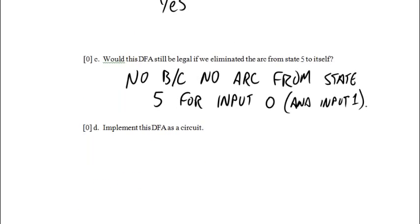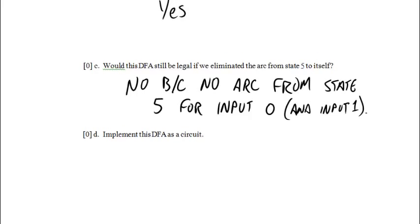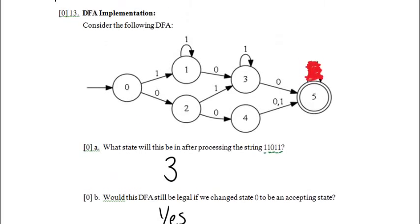Now, implement this DFA as a circuit. And what I said before is I'm not going to. But what I am going to do is kind of do the bare bones of how I would implement this as a circuit. So the first thing is you've got to lay out enough D flip-flops to store the states. Well, there's six states here. State 0, 1, 2, 3, 4, and 5.